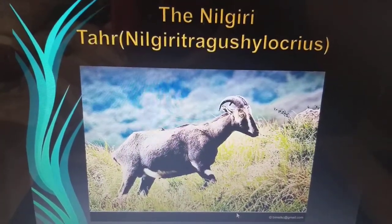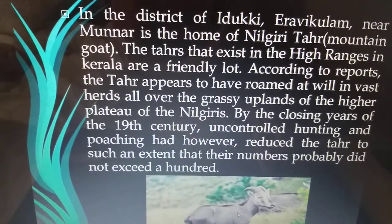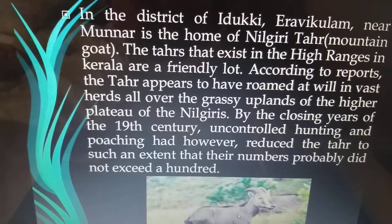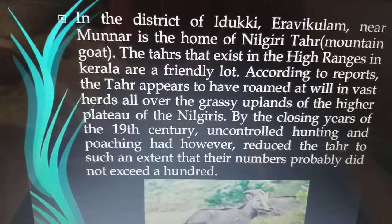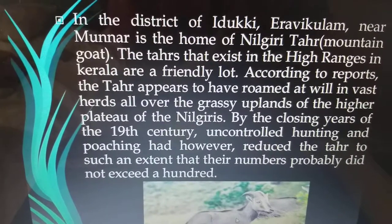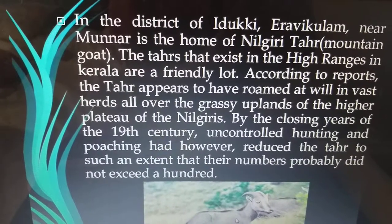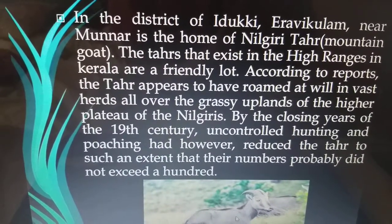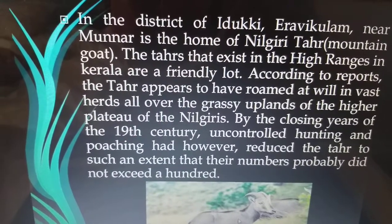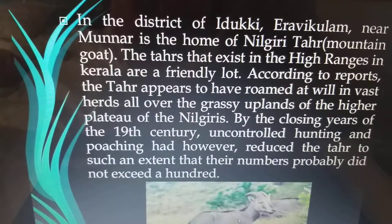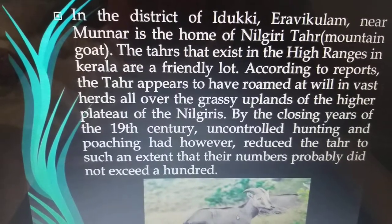Next is the Nilgiri Thar. The district of Idukki near Munnar is the home of the Nilgiri Thar. The Thars exist in the high ranges of Kerala. The Thar once roamed vast herds across the grassy uplands of the higher plateau of the Nilgiris. By the close of the 19th century, uncontrolled hunting and poaching had reduced the Thar to numbers that probably did not exceed a hundred.